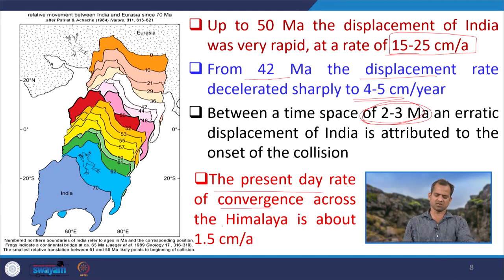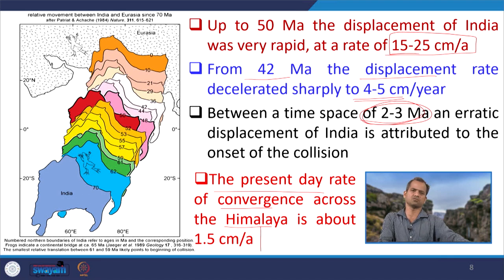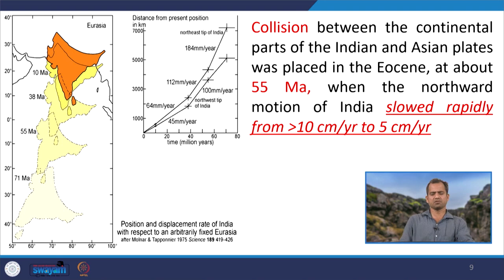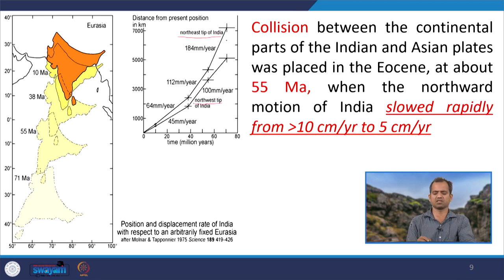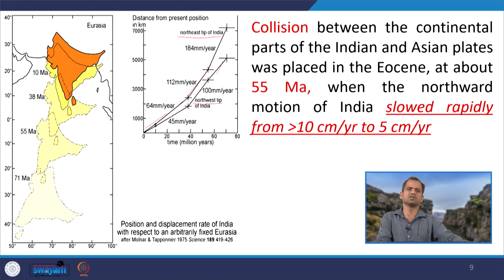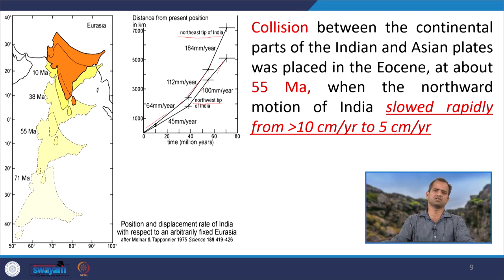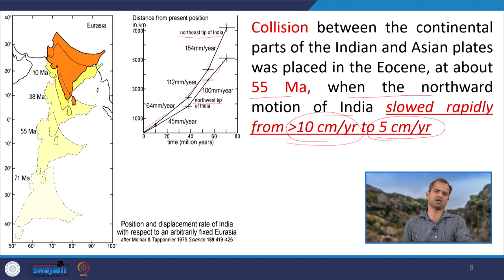The present-day rate of convergence across the Himalayas is around 1.5 centimeters per annum, which is not the same throughout the Himalayas due to different locking behavior and the segmented nature at different places. Collision between the continental parts of the Indian and Eurasian systems was placed in the Eocene at about 55 Ma, when the northward motion of India slowed down rapidly from about 10 to 5 centimeters per annum — meaning something was opposing the motion and causing it to decrease.